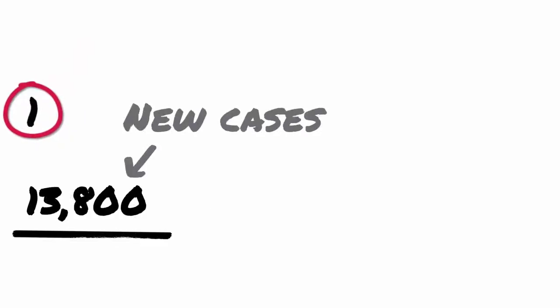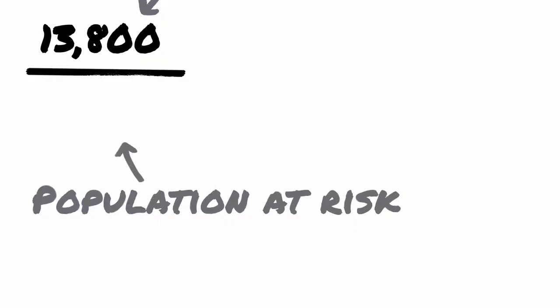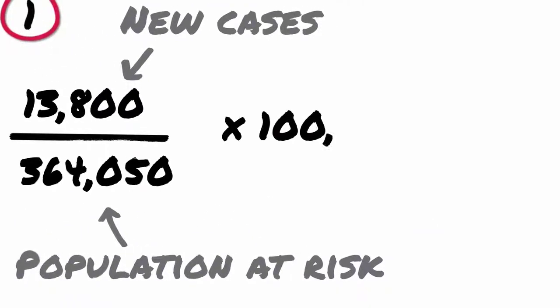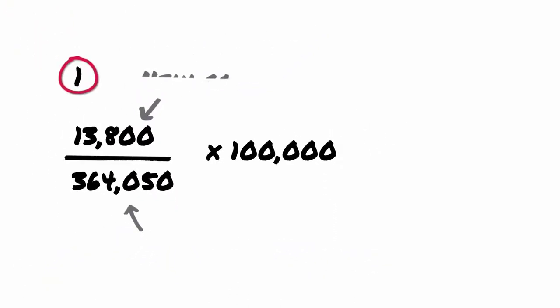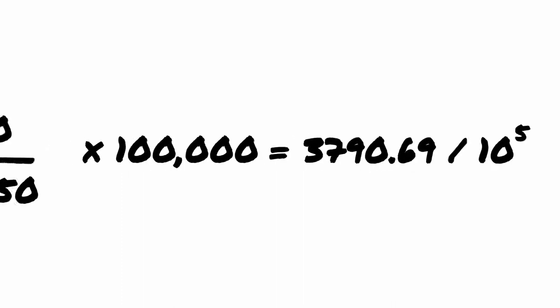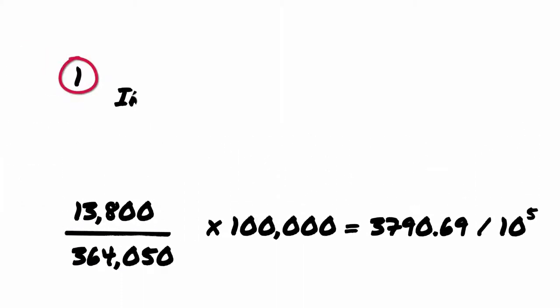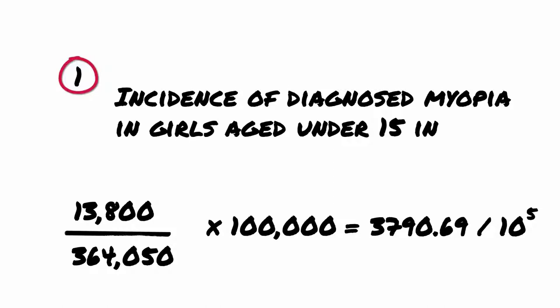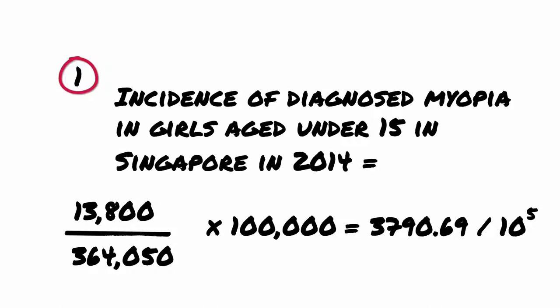To do this, we divide the number of new cases, 13,800, by the population at risk, 364,050, and multiply by 100,000. This equals 3,790.69 incident cases per 100,000 girls. So there were approximately 3,790 incident cases of diagnosed myopia in 100,000 girls aged under 15 in Singapore in 2014.